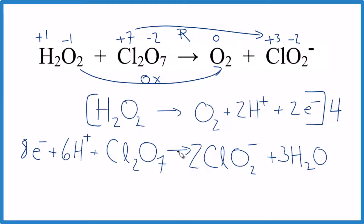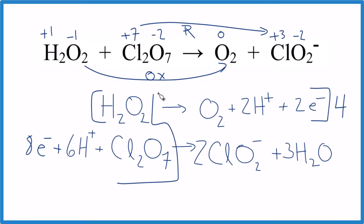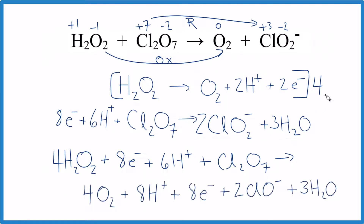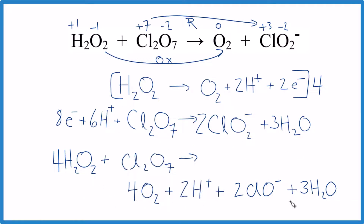The last step is to combine everything and cancel terms. Reactants are four times H₂O₂ and all of the Cl₂O₇ side. Products include four times each term from the oxidation side plus the reduction products. We cancel the eight electrons on both sides. We have eight H⁺ on one side and six on the other, so eight minus six leaves two H⁺ remaining.